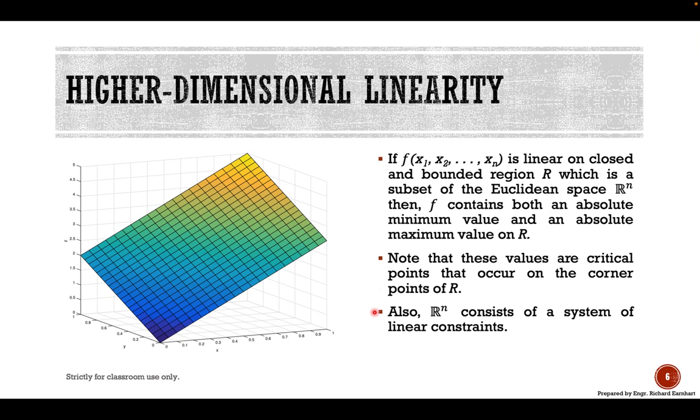The Euclidean space R^n consists of a system of linear constraints.